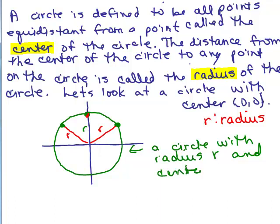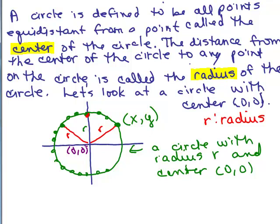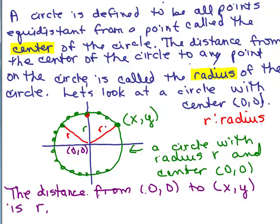Now there are infinitely many ordered pairs on this circle — so many points. All of these points on the circle, infinitely many. In general, let's just call one of those points x, y. There's a zillion points, just like on a line there's a lot of ordered pairs. And the center of the circle is (0, 0). So we know that the distance from (0, 0) to (x, y) is R — that's by definition. So we can use the distance formula between these two points, (0, 0) and (x, y). This is a generic point x, y — there are infinitely many of them — and we know whatever that distance is will equal R.